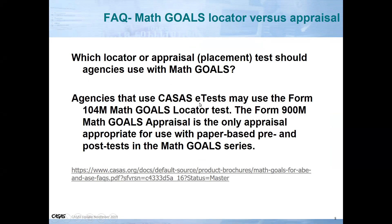Which locator or appraisal placement test should agencies use with Math Goals? Agencies that use the CASAS eTest may use Form 104-M Math for the Goals locator. The Form 900-M Math Goals appraisal is the only appraisal appropriate for use with paper-based pre- and post-tests in the Math Goals series. I've also included a link to the FAQ document on Math Goals.